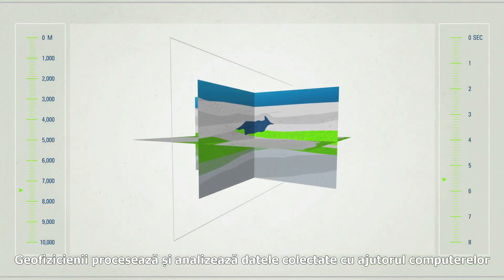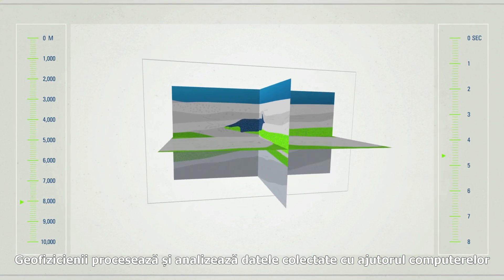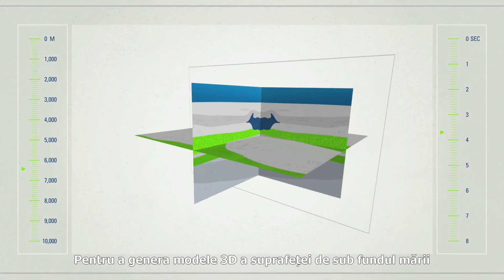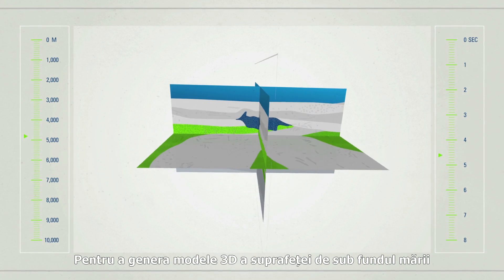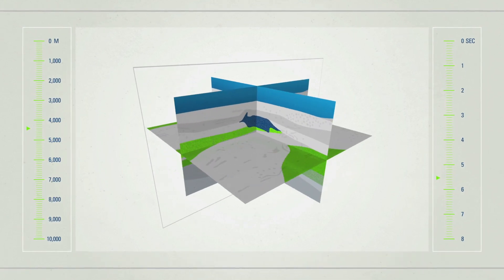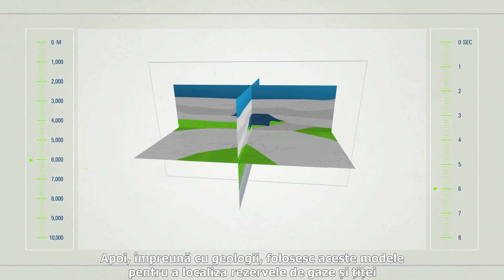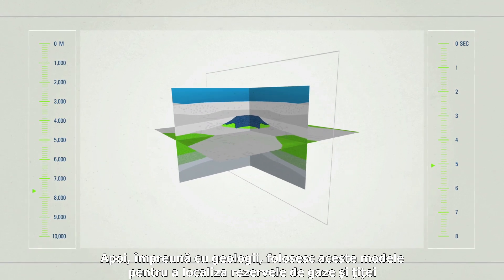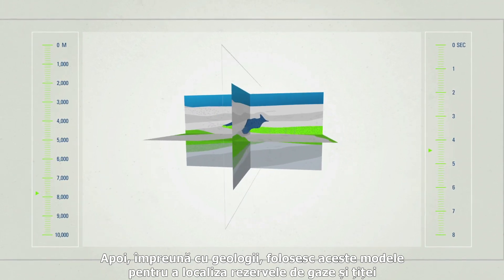Geophysicists process and analyze the collected data with the help of computers to generate detailed 3D models of the subsurface. Then they team up with geologists and use these models to locate gas and oil reservoirs.